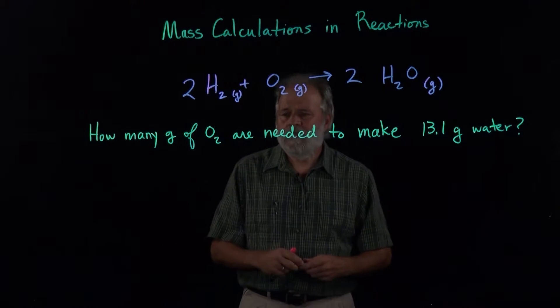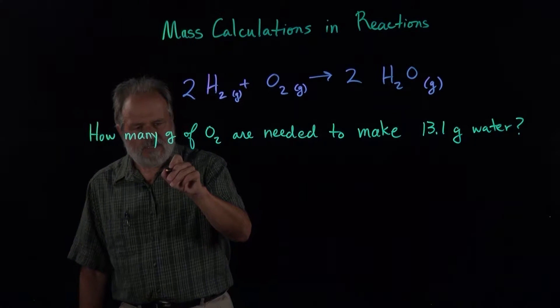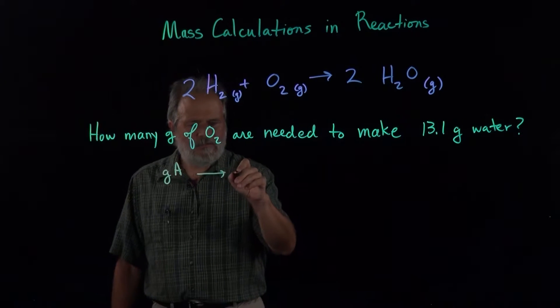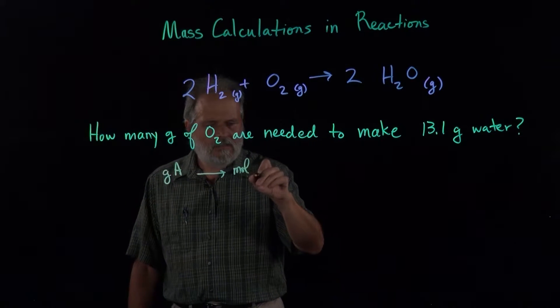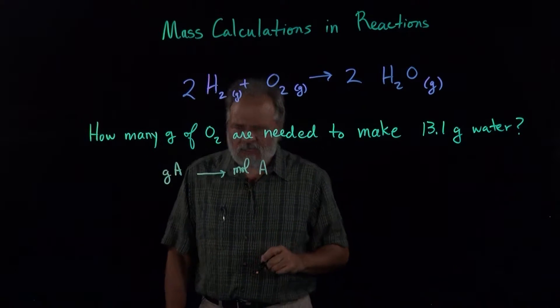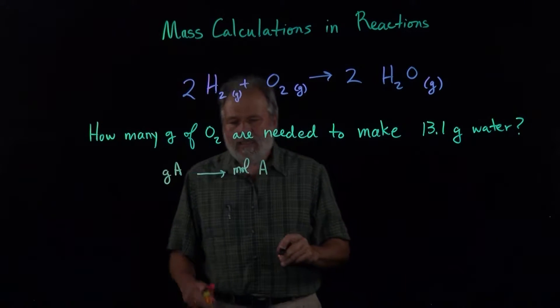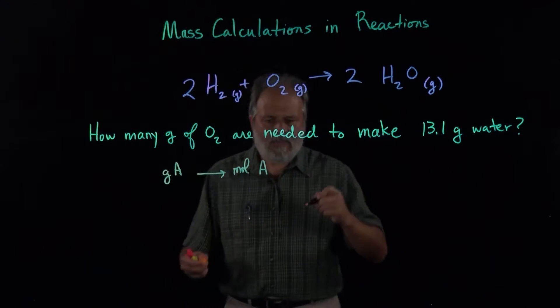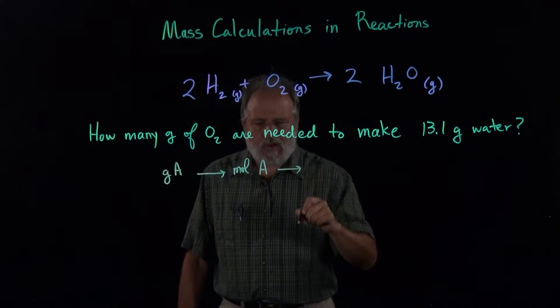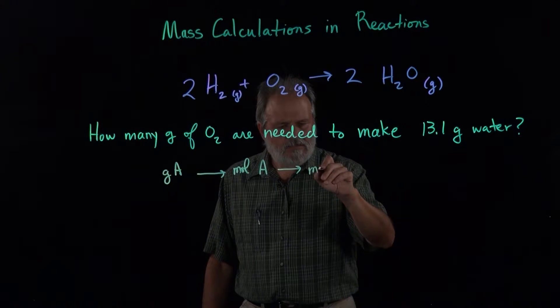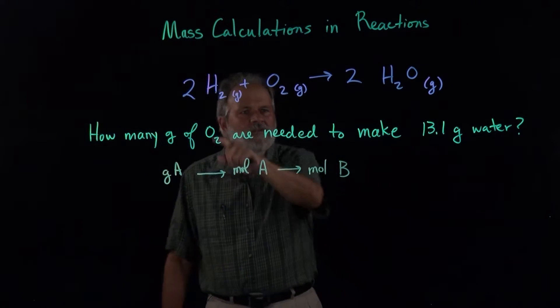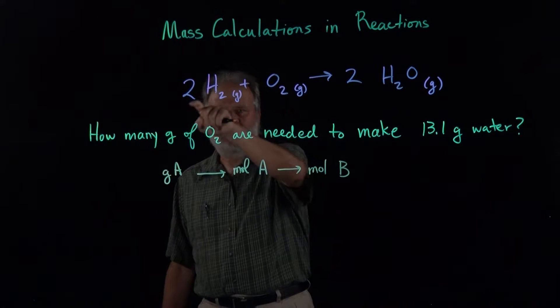So the general procedure is if you have grams of molecule A, you convert that to moles of molecule or substance A, and the molar mass does this conversion. And then moles of one substance goes to moles of another substance, substance B. The mole to mole conversion is done with these number ratios.